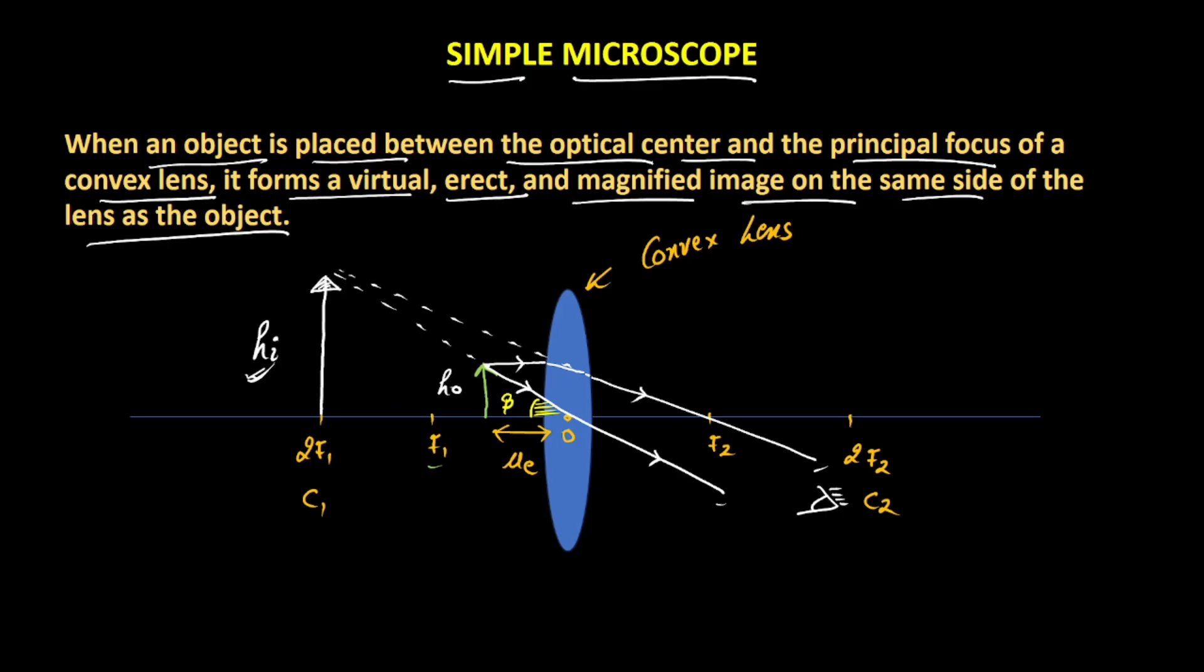So ultimately, the image would be magnified. In this case, we can define magnification as beta divided by alpha, as in how much the angle got increased with respect to the initial angle that was when the object was at the near point of the normal human eye.